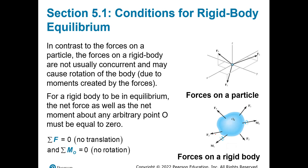Conditions for a rigid body: in contrast to forces on a particle, the forces on a rigid body are not usually concurrent and may cause rotation of the body. For a rigid body to be in equilibrium, the net force as well as the net moment needs to be zero around an arbitrary point — any point in the body. So basically, we're moving into more real-life examples where we apply these equations to perform a statical design.